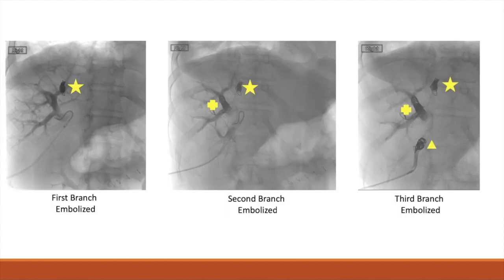After stasis is achieved and the pigtail catheter has been used to perform a portal venogram, we swap it out for an appropriate catheter in order to embolize the accessed portal vein, which will be the final target branch. Since access was achieved through a vein that needs to be embolized, the catheter is withdrawn distally to the point of interest and embolization is performed. The triangle marks the final point of embolization as we pull out of the portal system.